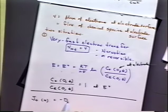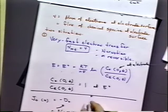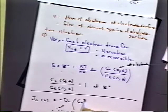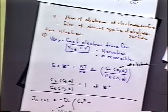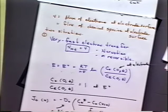We're going to put in a constant which we'll later call the diffusion coefficient. It has units of centimeters squared per second. Then we'll put in the bulk concentration of species O and the concentration of species O at the electrode surface. We'll also put in another term which we'll call delta, which has units of centimeters.